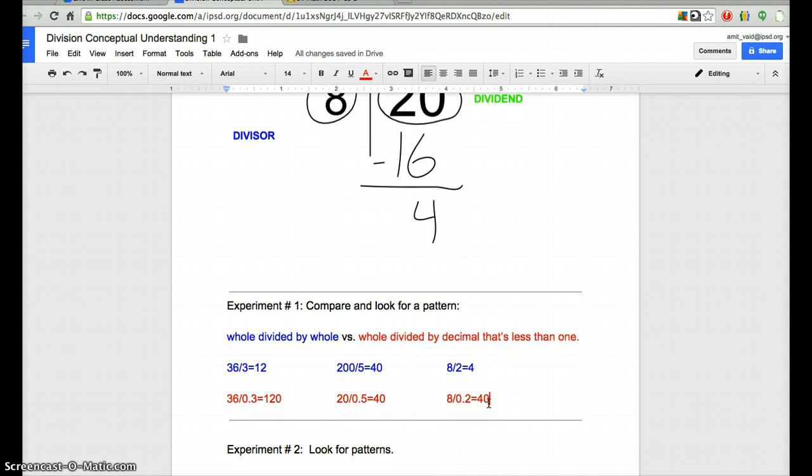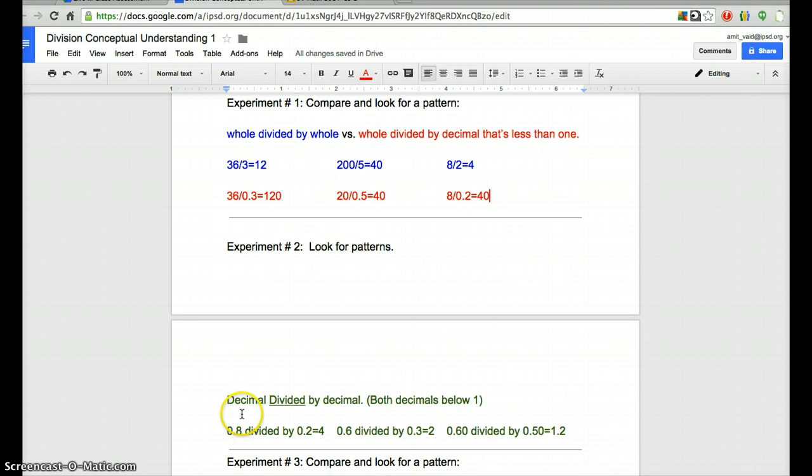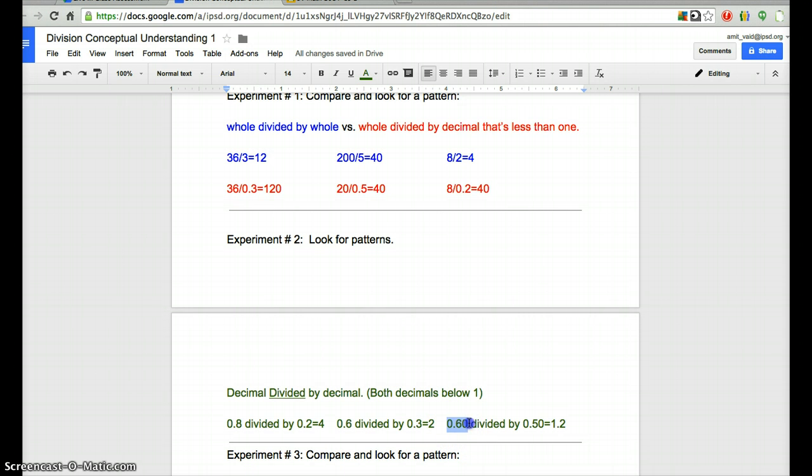Let's go to the next experiment. This one is called Look for Patterns. In this case, I took a decimal that was less than 1 and divided it by another decimal that was less than 1. So I took 8 tenths, which is just slightly less than 1 whole, and I divided it by 2 tenths, and I received the quotient of 4. In this case, I took 6 tenths, which is just slightly above half, and I split it amongst 3 tenths. My quotient was 2. And then I took 60 hundredths and divided that by half, and I got 1 and 2 tenths. Again, you have to ask yourself: what do you notice? What are you discovering about fractions, division, multiplication, decimals?